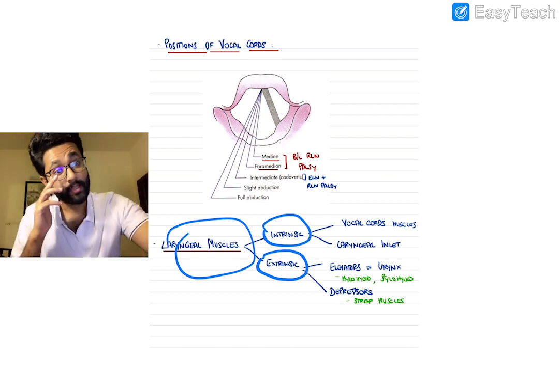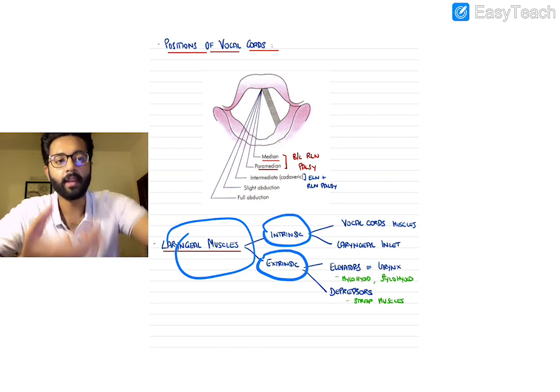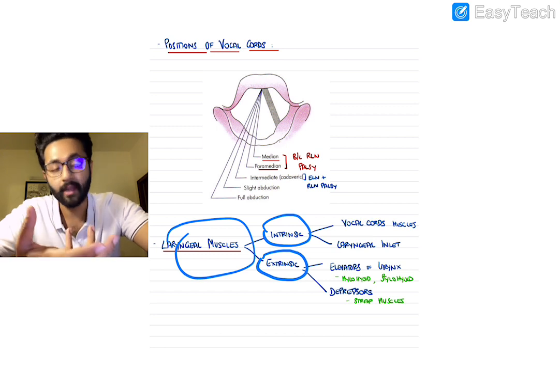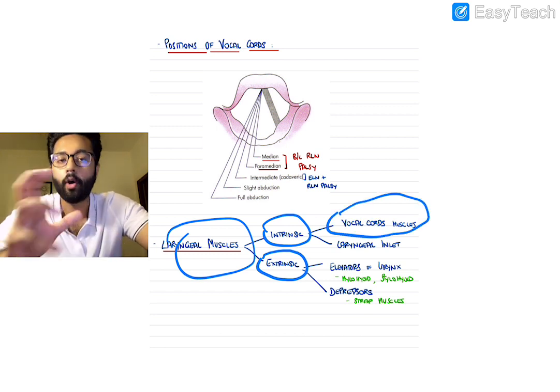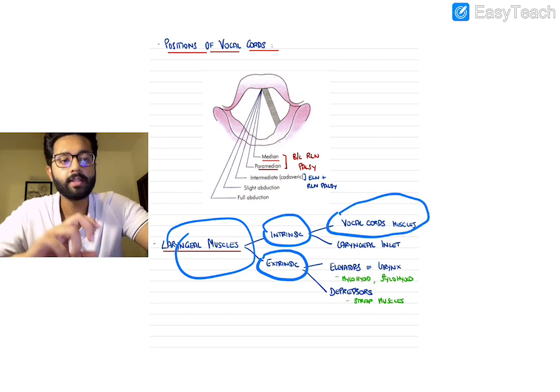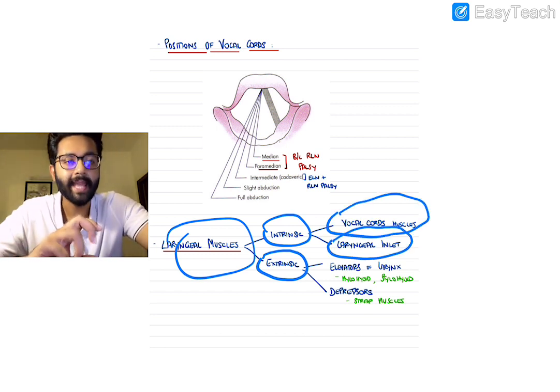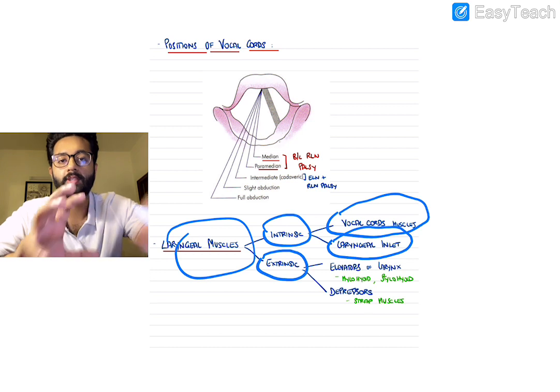Intrinsic muscles are then further divided into two groups: muscles acting on the vocal cords and muscles acting on the laryngeal inlet.